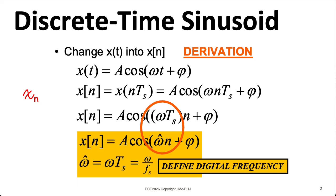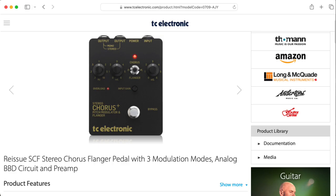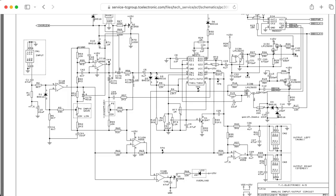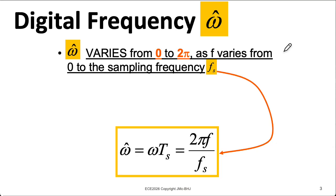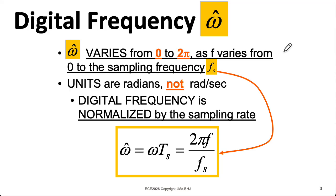We call omega hat a digital frequency, although all of this theory applies to discrete time analog systems where you're not explicitly digitizing an amplitude. As f varies from zero to the sampling frequency fs, omega hat varies from zero to 2π. Notice that the per second unit of f cancels with the per second unit of the sample rate. So you wind up thinking of omega hat as having units of radians, not radians per second. Later in the course, when we look at designing DSP filters, we'll see that it's very convenient to work in this omega hat domain.